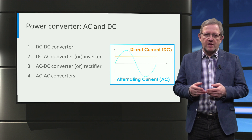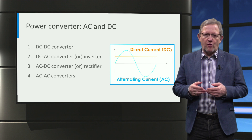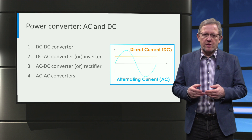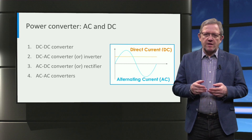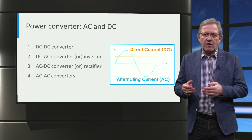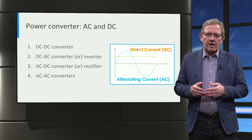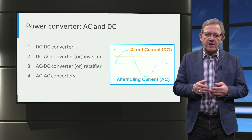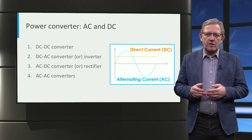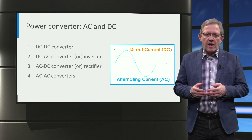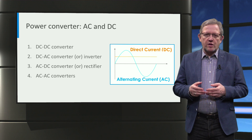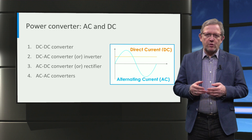Based on this classification we can have four types of power converters: namely a DC to DC converter, a DC to AC converter which is commonly called an inverter, an AC to DC converter which is commonly called a rectifier, and an AC to AC converter. For example, a DC to AC converter converts power from an input DC source to an output AC load.